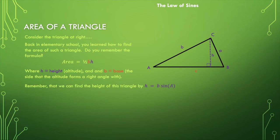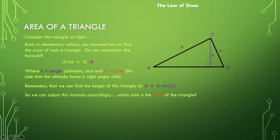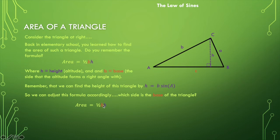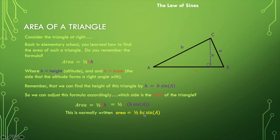Looking at this particular triangle, which side represents the base? Hopefully you would say — and I gave you a hint by colors — that side c is going to be the base because it makes the right angle with the height. So if we take our initial formula and substitute, we replace the base with side c and replace h with b·sin(A). We end up with one-half times c times b·sin(A), which is normally written as: area equals one-half bc times the sine of angle A.